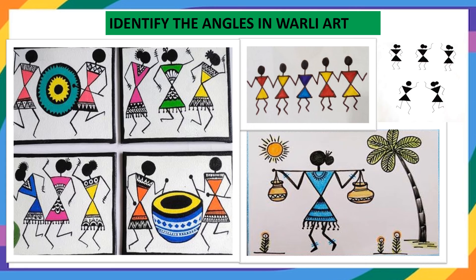This is a task for you all. I hope you find this quite interesting. You can draw a Worli art of your choice — think, imagine, and give it a festival theme, sport theme, dancing theme, music theme, or even a birthday party theme. Use the Worli art figures and identify the different angles and name them.